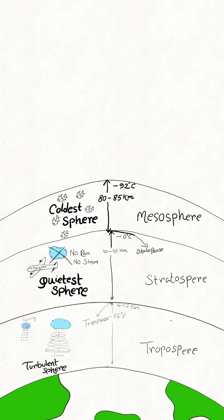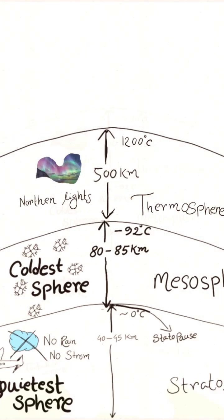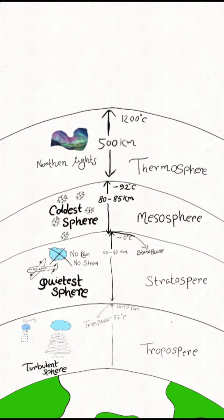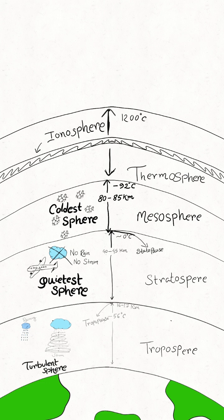The next one is the thermosphere, which is situated nearly 500 kilometers away from the sea level, and its highest temperature is 1200 degrees Celsius. Here we can observe the northern lights, and also this layer contains the ionosphere.